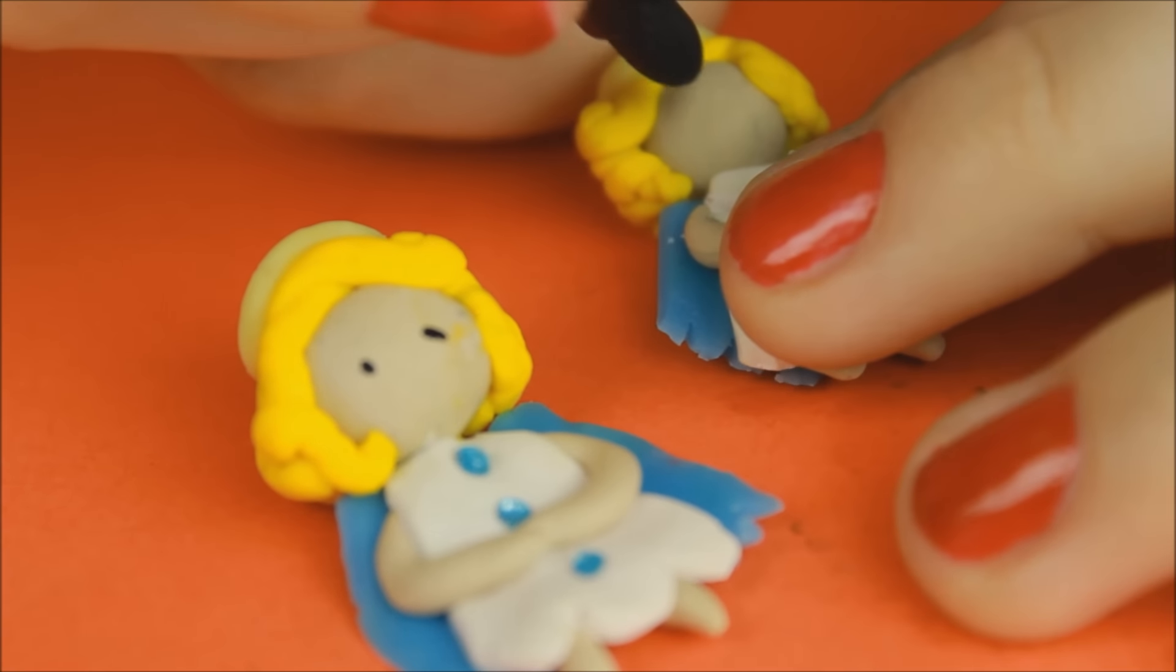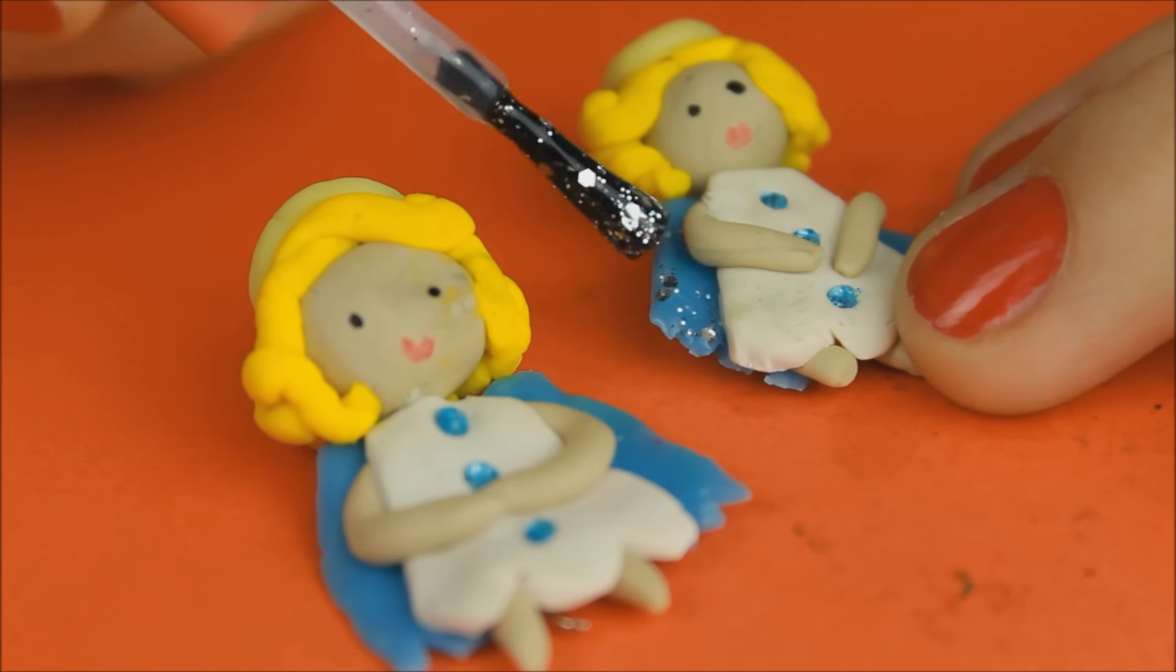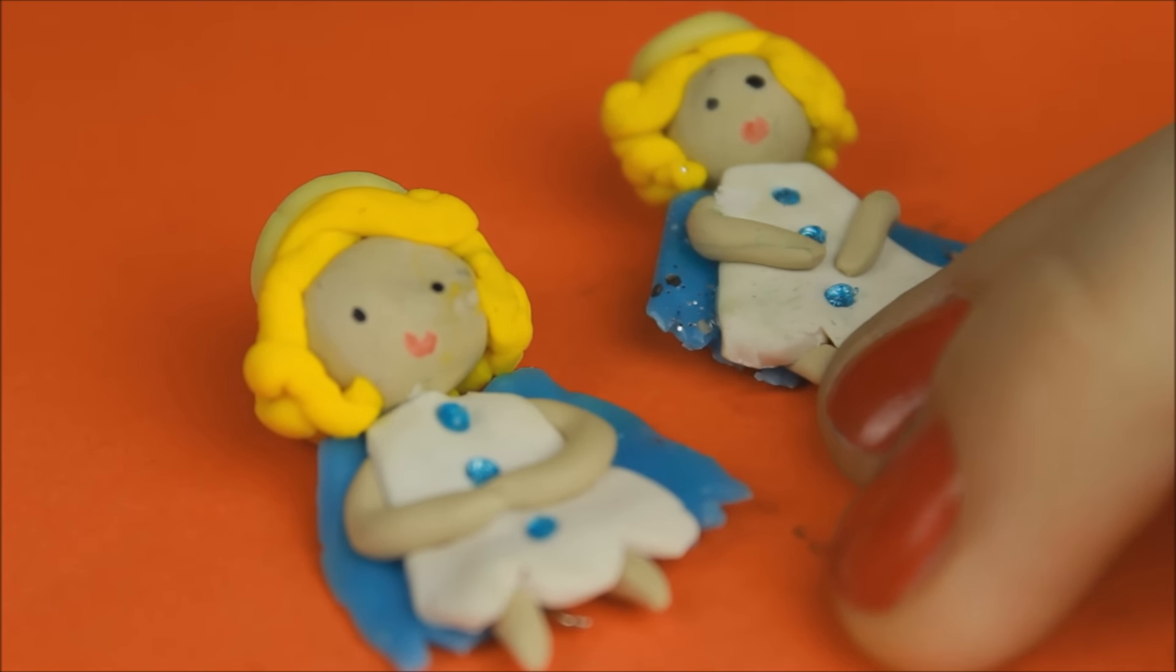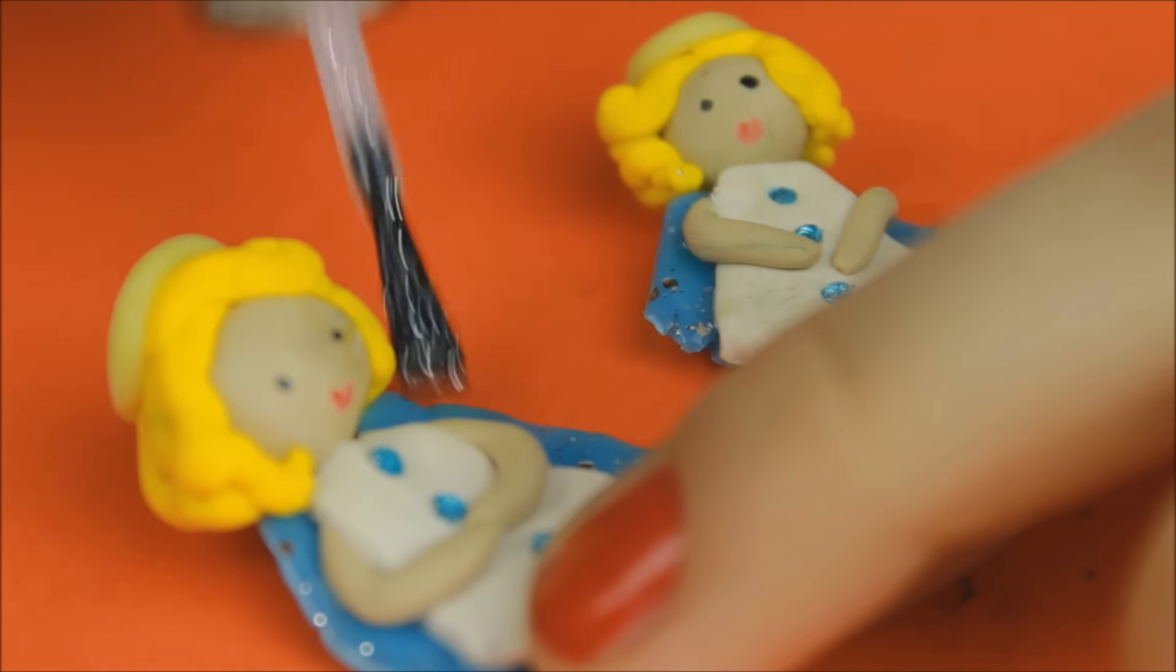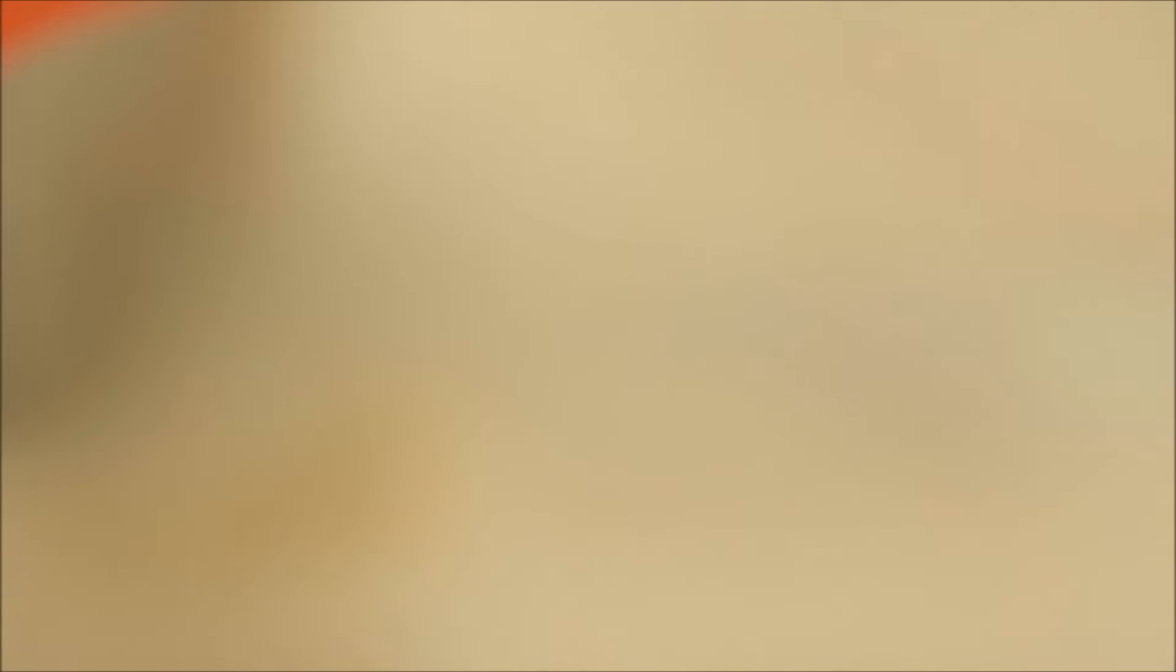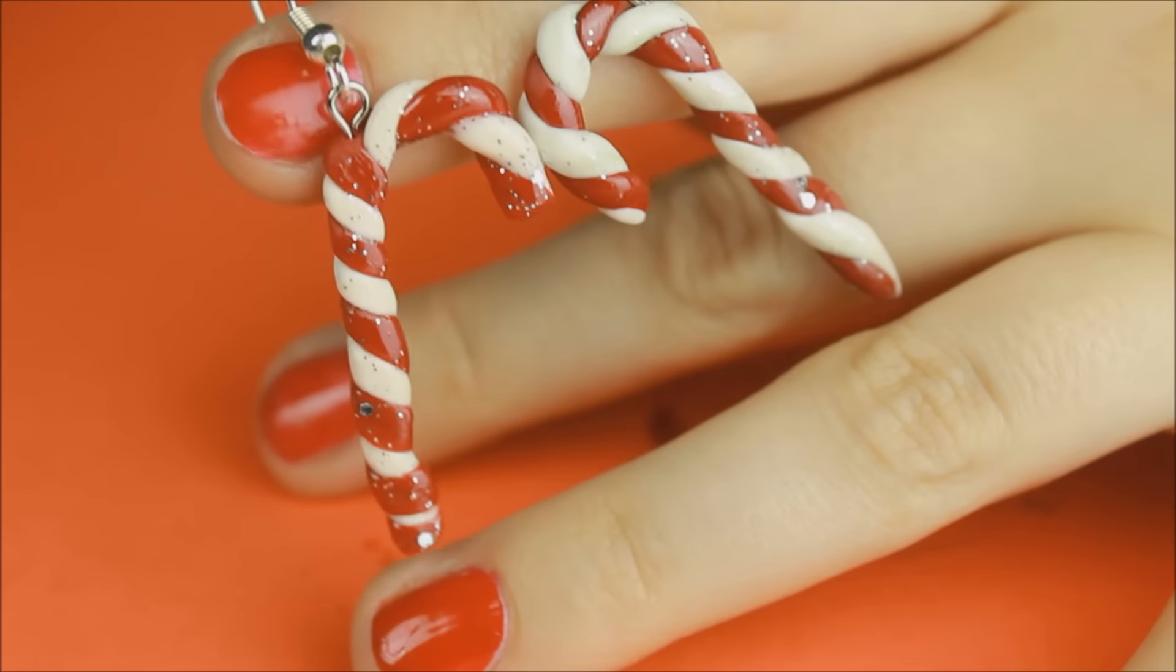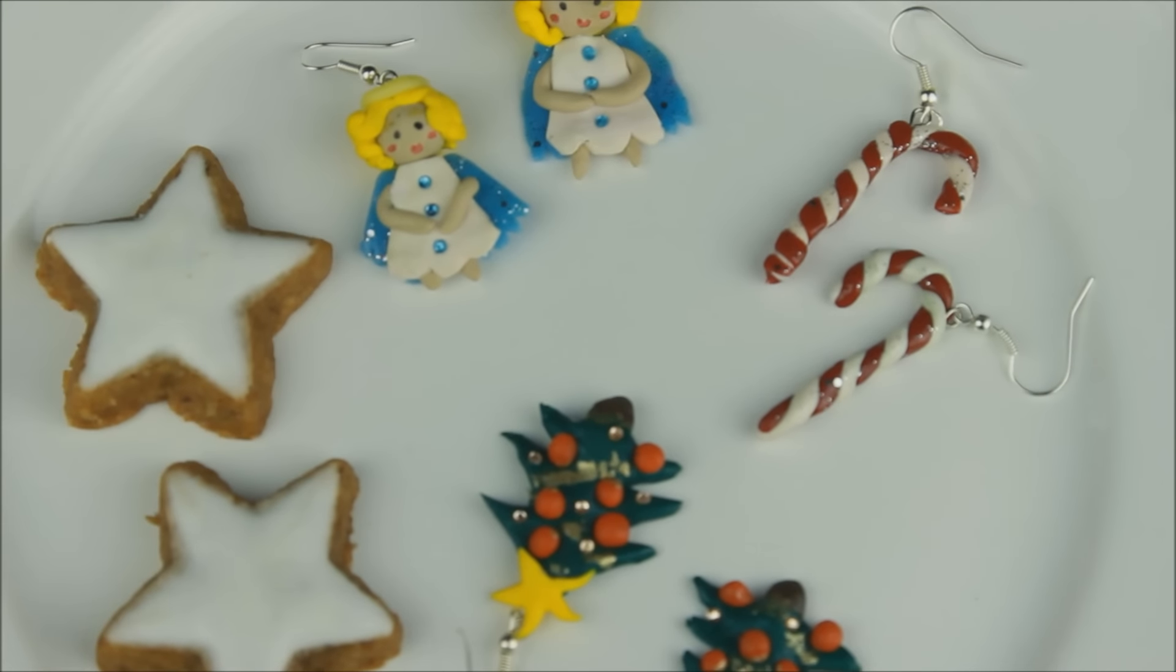Den Engelchen habe ich noch Gesichter aufgemalt mit so einer Art Edding. Da habe ich mich bei diesem einen Auge ein bisschen vermalt, aber das konnte ich dann noch wieder wegmischen und neu machen. Und dann habe ich noch meinen Nagellack auf die Flügel diesmal nur gegeben, weil ich fand, dass das einen ganz schönen Effekt machte. Dieser hier ist jetzt so ein bisschen glitzerig. Ihr könnt da wirklich nehmen, was ihr möchtet. Und die Candy Canes habe ich dann einmal komplett mit Nagellack bestrichen. Ihr könntet auch zum Beispiel einfach nur Klarlack nehmen. Das sieht auch dann wunderschön aus.